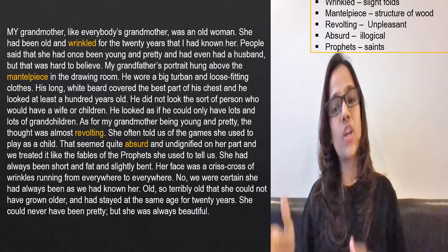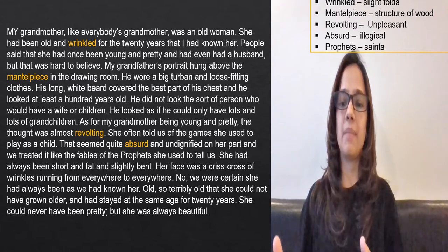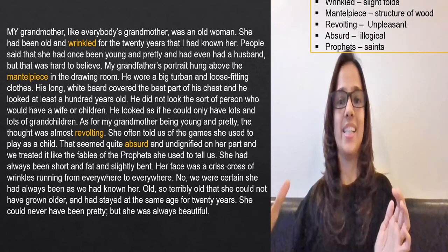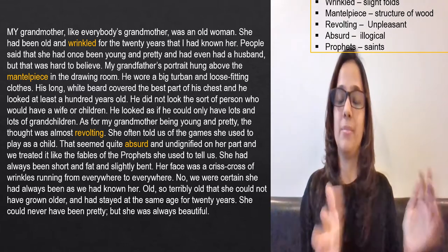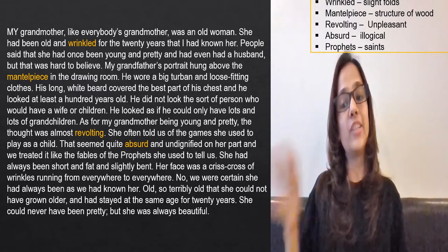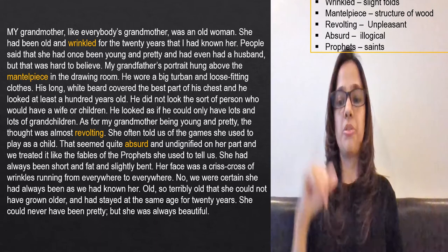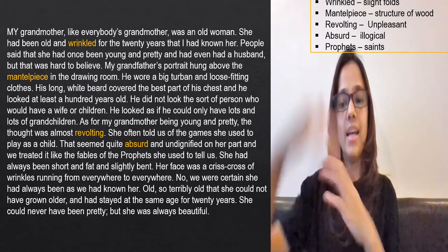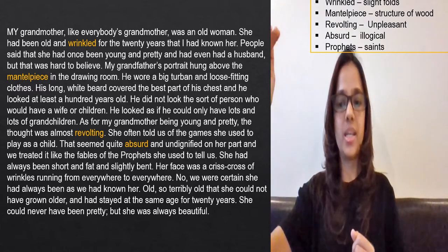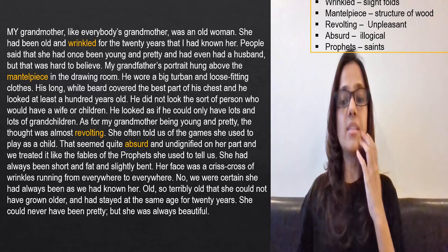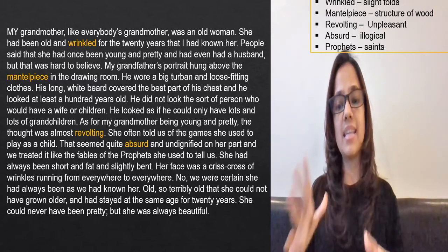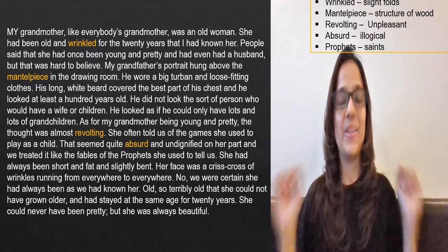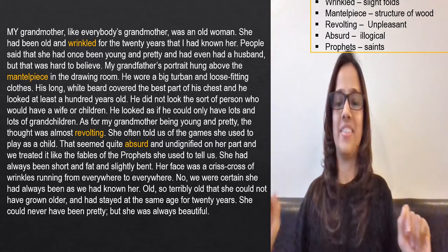The author is describing the grandmother as someone he has seen old for at least 20 years — she hasn't changed, neither grown older nor younger. Regarding the grandfather, he saw only the portrait on the mantelpiece — a wooden structure in the drawing room. Looking at that picture, the author felt he was at least 100 years old and could not possibly have had a wife and children, but could have had lots of grandchildren.